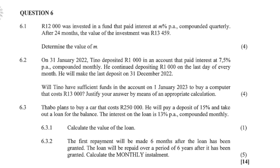Question 6.1. 12,000 Rand was invested in a fund that paid interest at M% per annum compounded quarterly. After 24 months, the value of the investment was 13,459 Rand. You must determine the value of M — that is, the percentage or the interest rate.